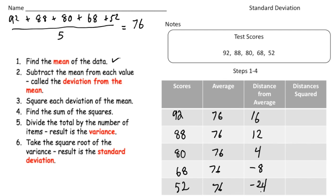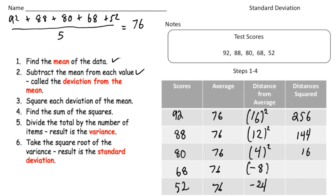Step number three: square each of those numbers. So 16 squared is 256, 12 squared is 144, 4 squared is 16, negative 8 squared is 64, and negative 24 squared is 576.